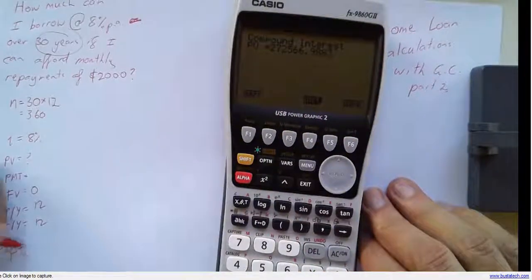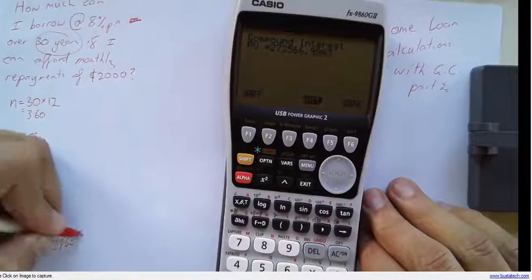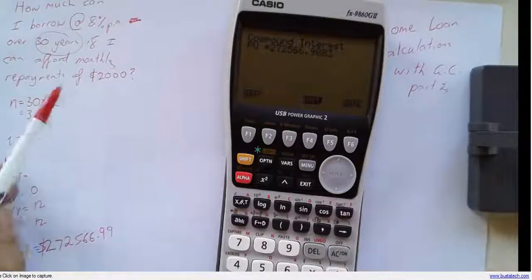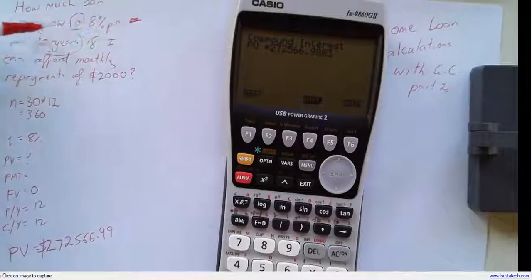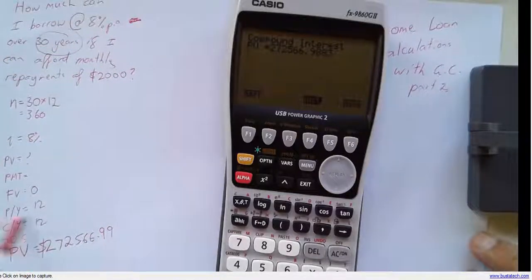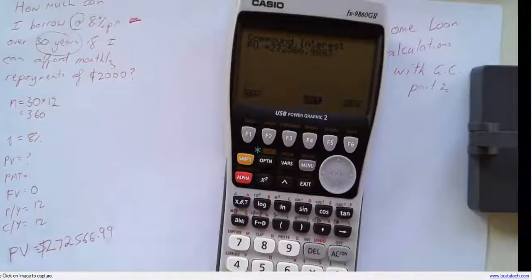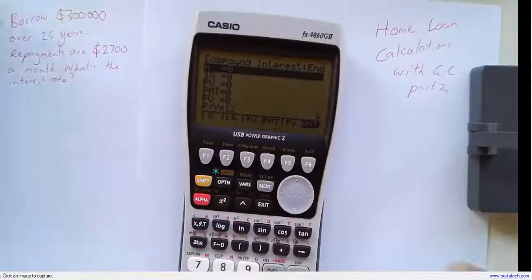You press F3, you'll get your present value, which is $272,566.99. Now that's the amount of money that this person can borrow at this interest rate and if they want repayments of $2,000. Okay, so it's going to be tough to buy a house in Brisbane.